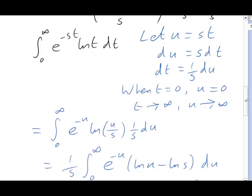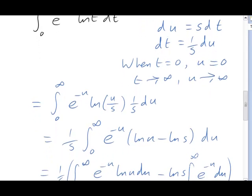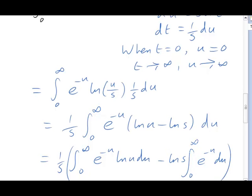OK, now let's break that up into two pieces. One over s in front. The exponential times log u. And then in the second integral here, minus log s has also been pulled out, because again that's a constant as far as u is concerned. That second integral can now be performed. It's just the integral of an exponential.